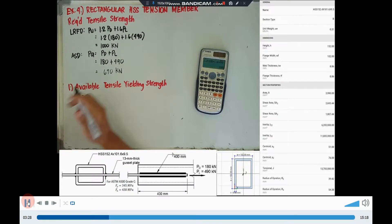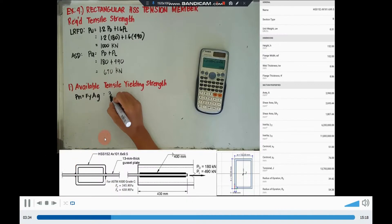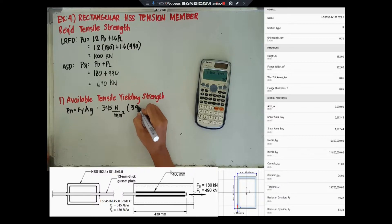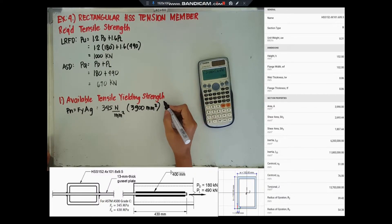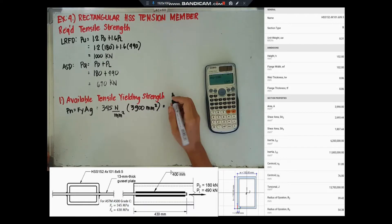For our available tensile yielding strength, we will determine the nominal tensile strength by multiplying the yield stress by the gross area. So 345 MPa multiplied by 3,900 is equal to 1,345.5 kN.